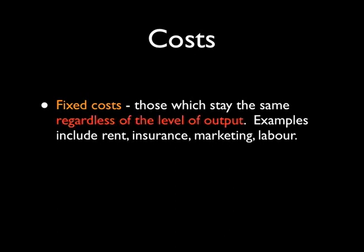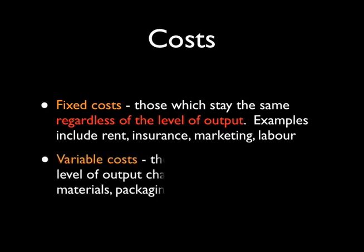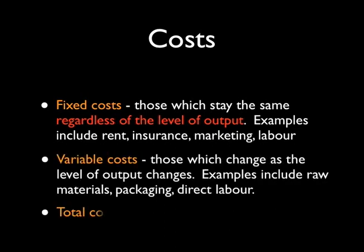level of output. Examples include rent, insurance and marketing. Variable costs are those which do change as the level of output changes - things like raw materials and packaging. Total costs we find by adding fixed costs and variable costs.